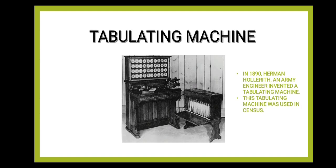The next device is the Tabulating Machine. In 1890, Herman Hollerith, an army engineer, invented a tabulating machine. This tabulating machine was used in the census to count the population of the USA. It gave a quick count of the US population. The use of the tabulating machine was so successful that the company that later became famous as the International Business Machine, or IBM, was named after it.